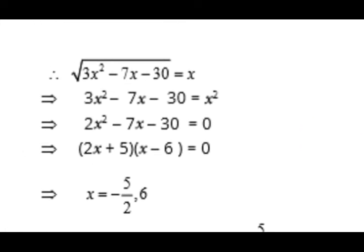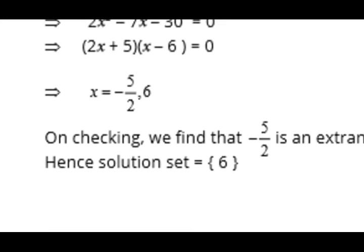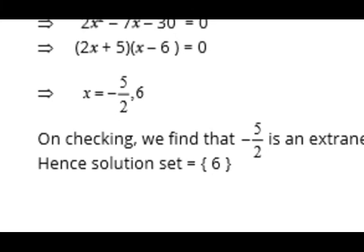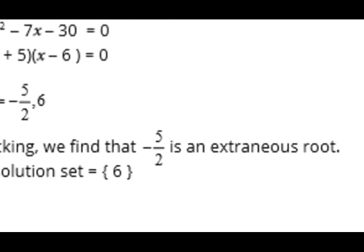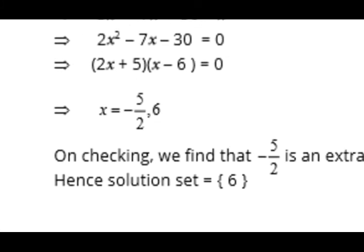Since a equals the radical expression, we have √(3x² − 7x − 30) = x. Squaring both sides, x² moves to the left-hand side, and we factorize: 2 × 30 = 60, and the factors of 60 that give a sum of 7 are 12 and 5. Do all steps. On checking the roots, −5/2 is an extraneous root. Therefore the solution set is {6}.